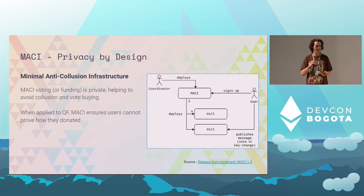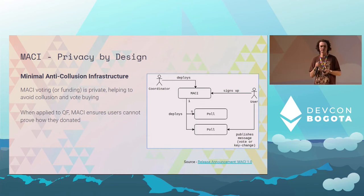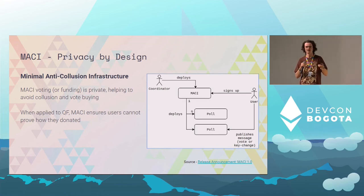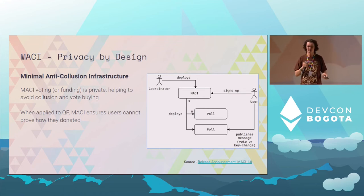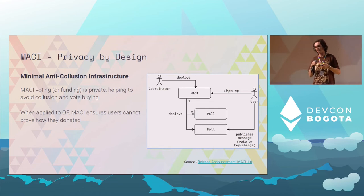MACI is another really popular mechanism, used by CLR fund — it's all about privacy. Privacy is a public good, privacy is a human right. MACI voting or funding is private, helping avoid collusion and vote buying. In quadratic funding, users cannot cryptographically prove to others how much they've donated or who they've donated to. Some caveats: it relies heavily on sybil resistance assumptions, you can only make donations on one chain, and you can only contribute once to a round. Privacy is really important and this is something we'll be experimenting with soon.